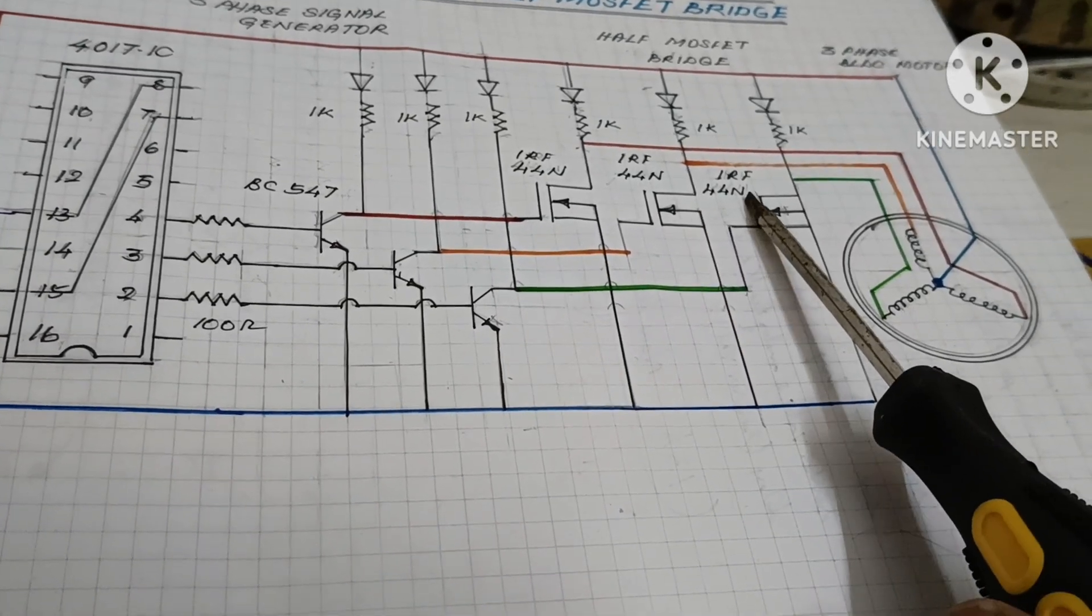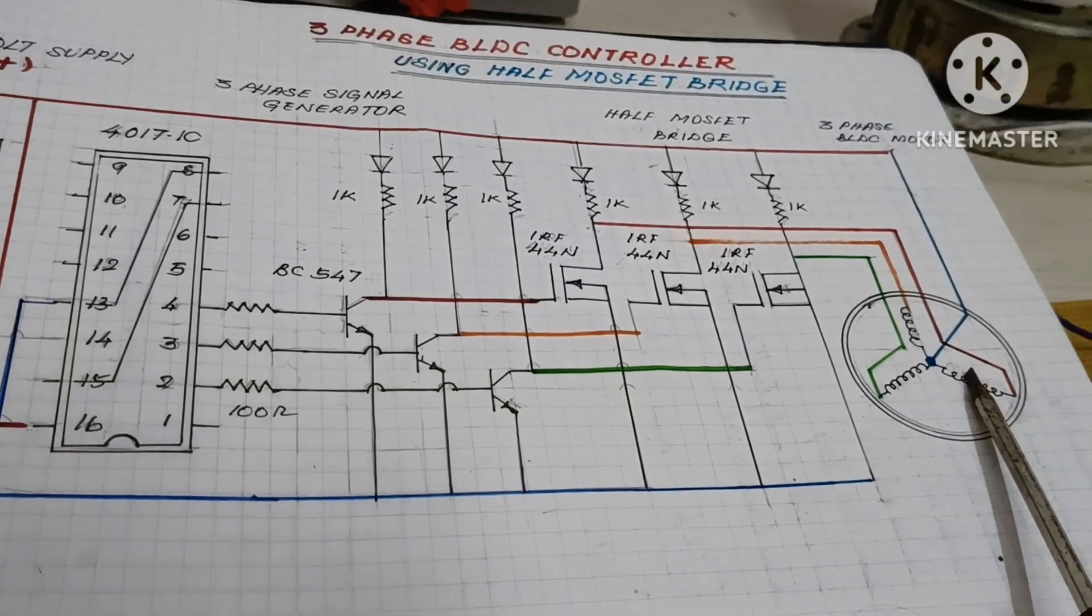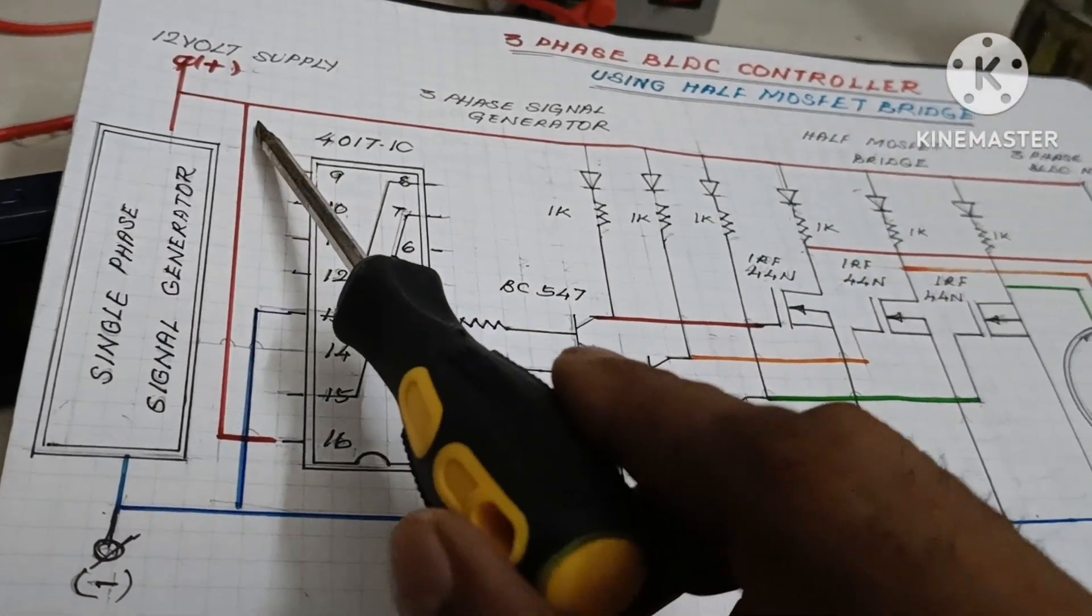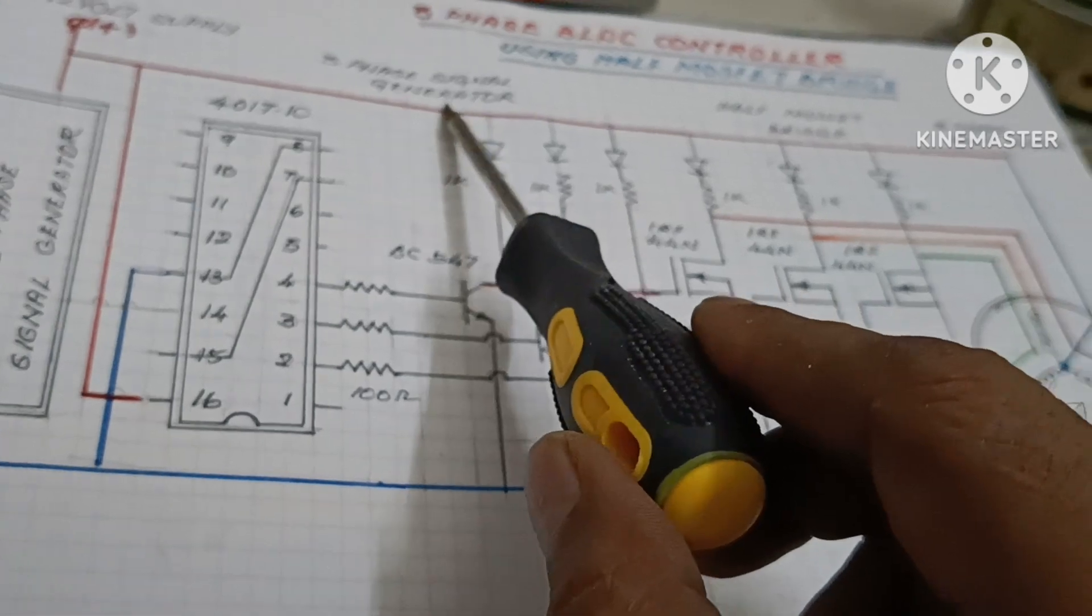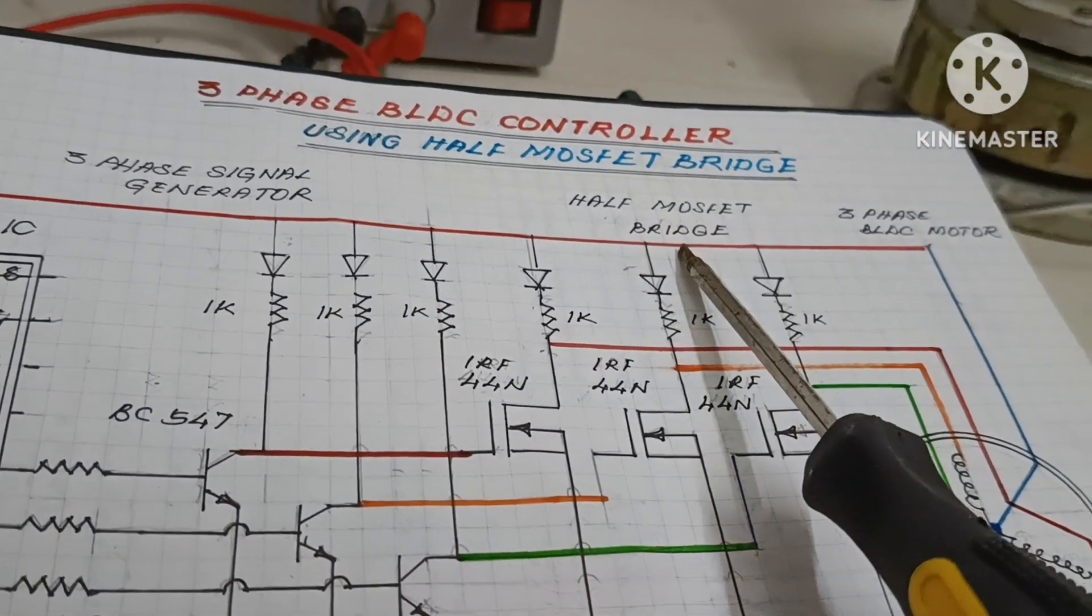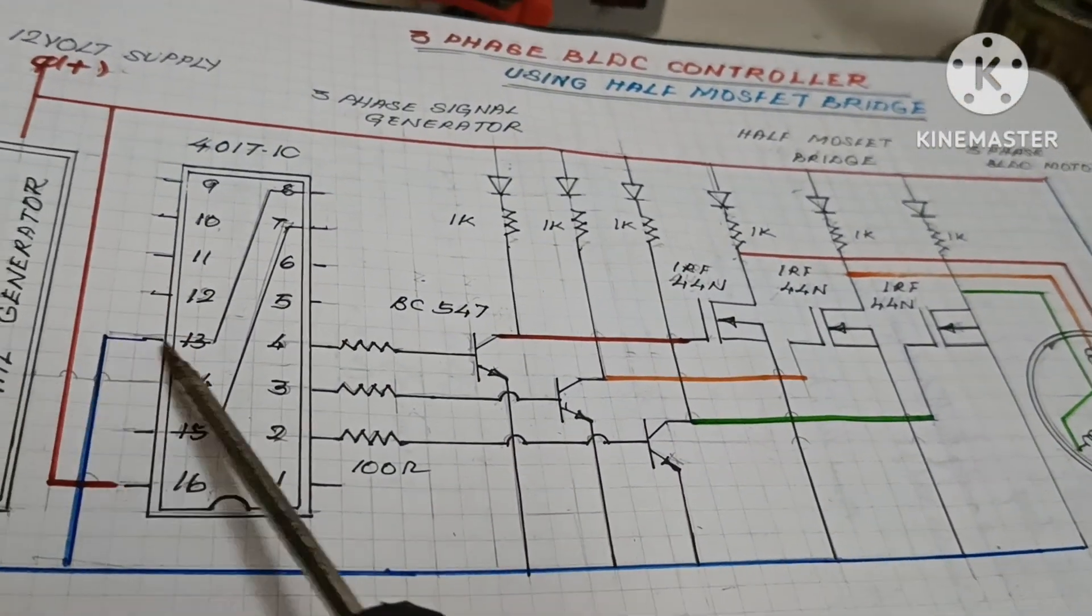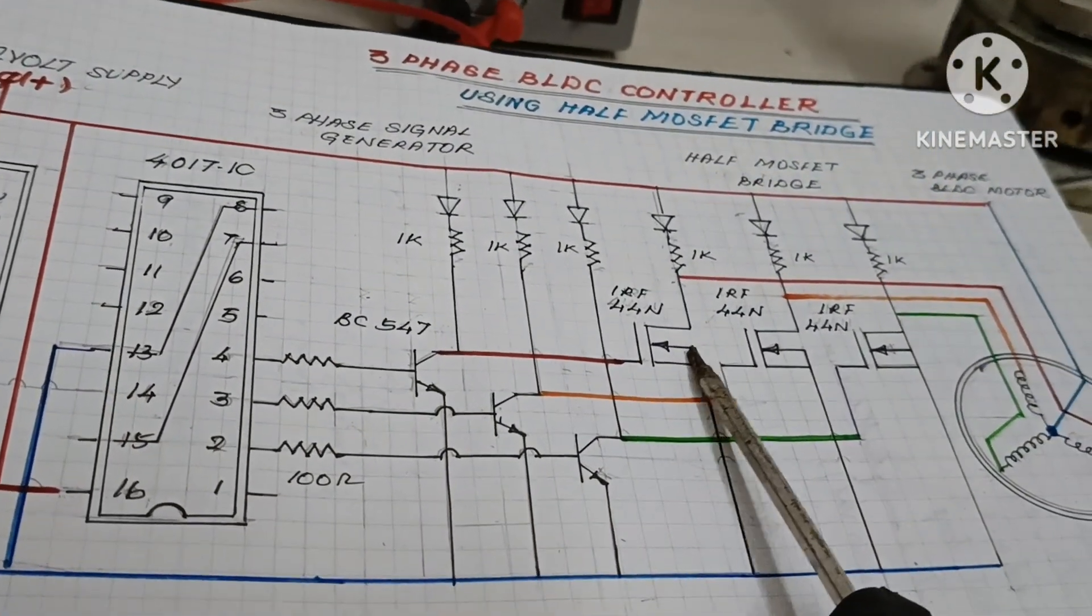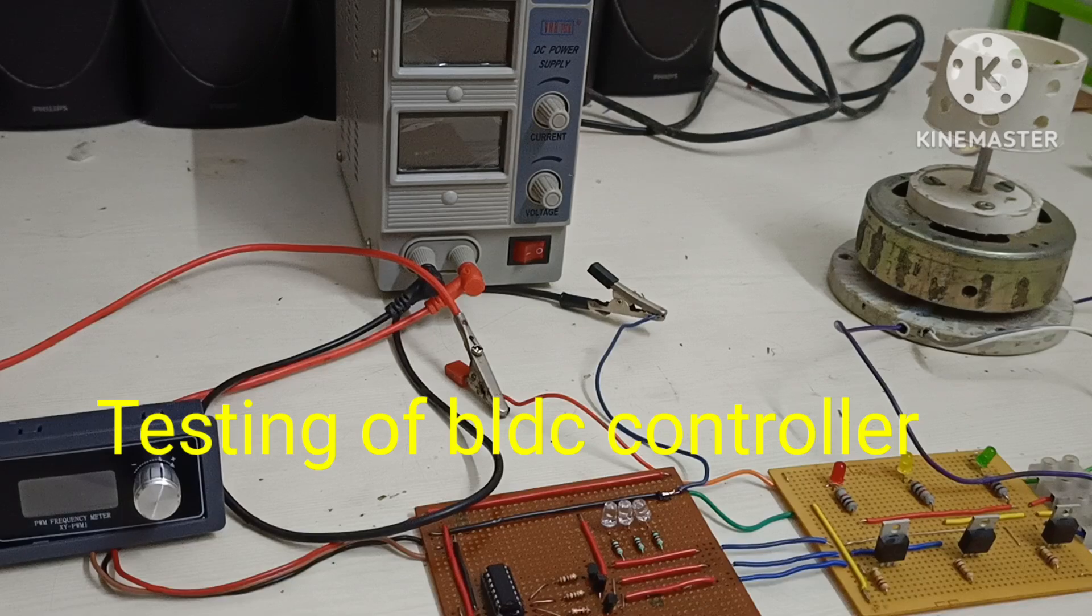The output of the MOSFET bridge is given to the motor. Here the single phase generator, three phase signal generator. This is the various stages of the three phase BLDC controller. Now I am going to use the BLDC controller.